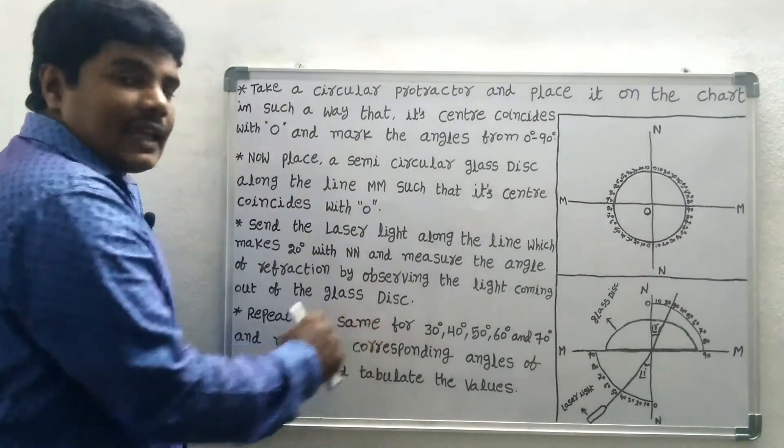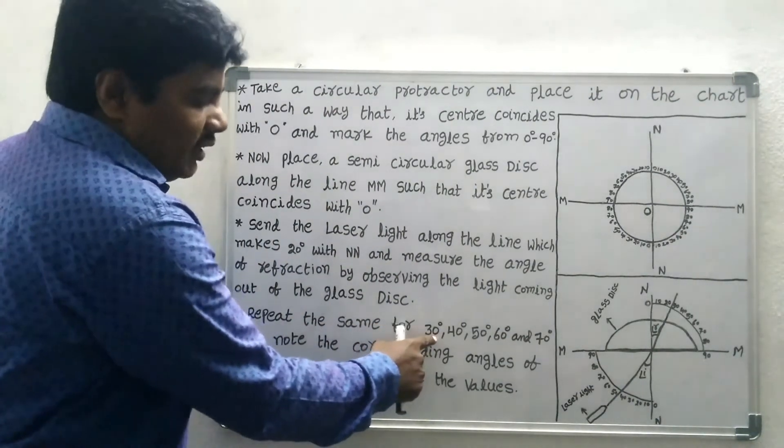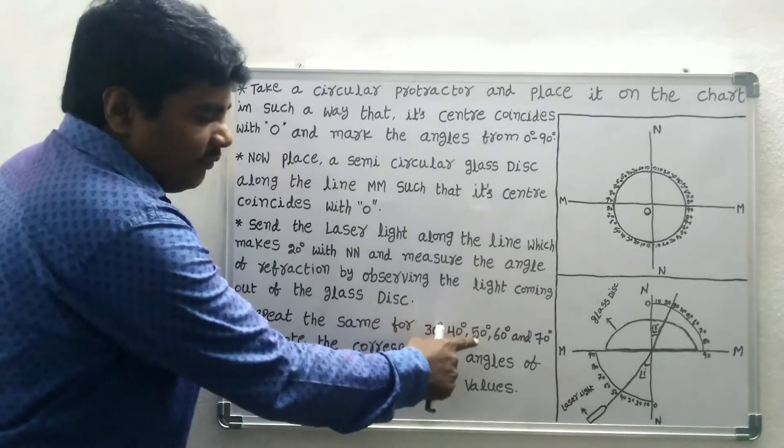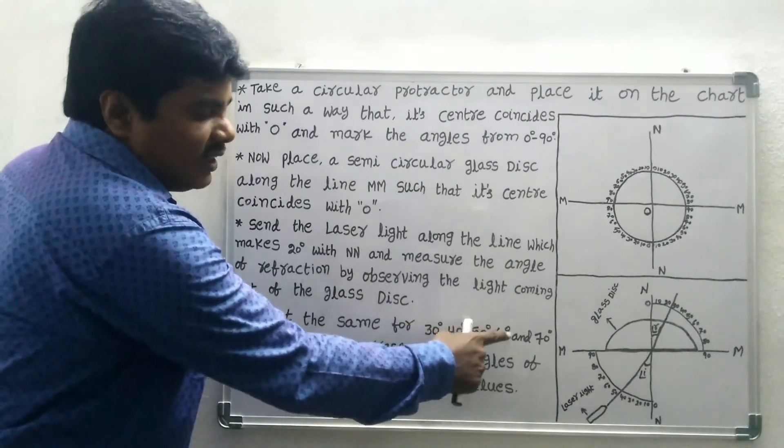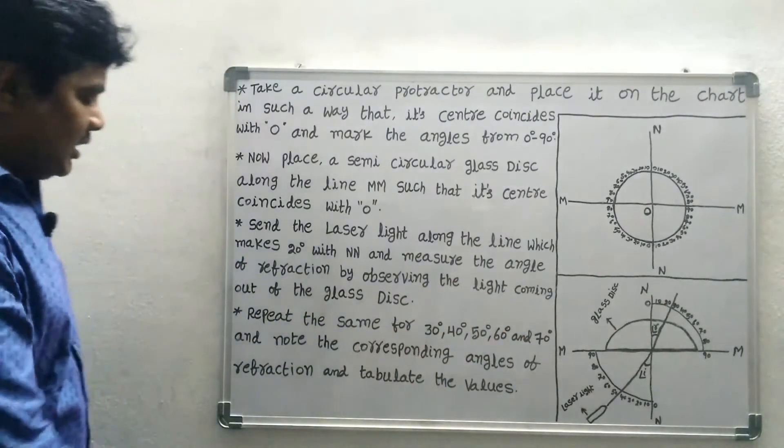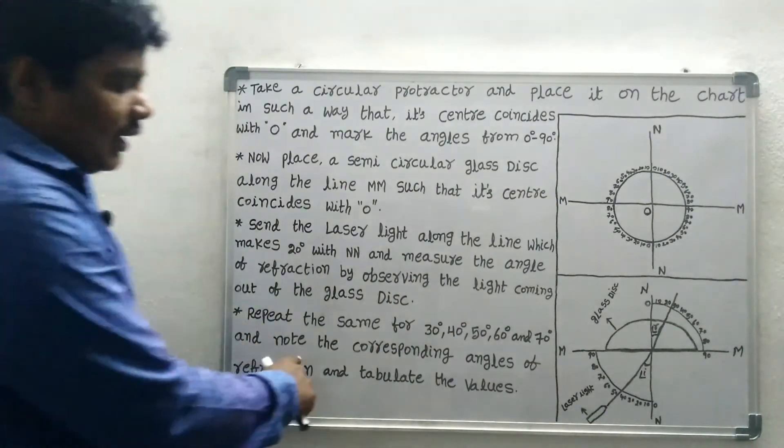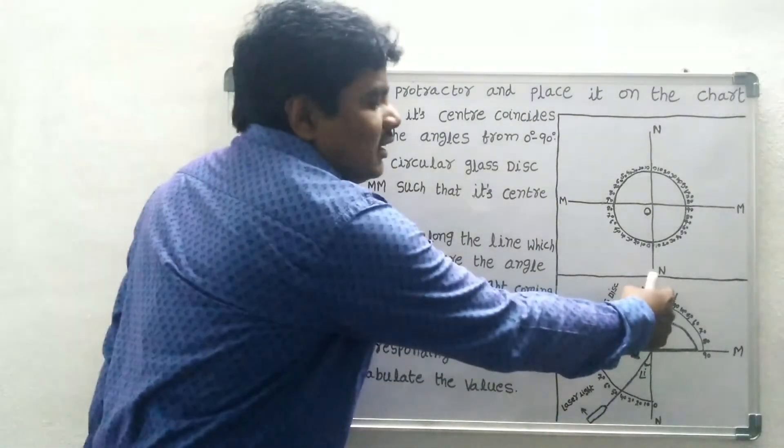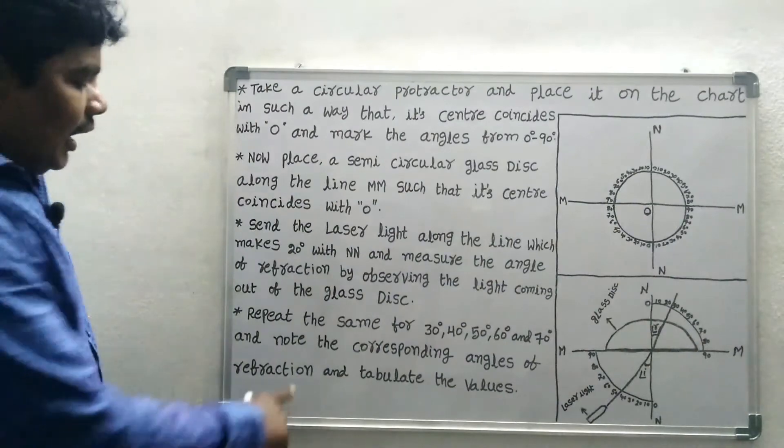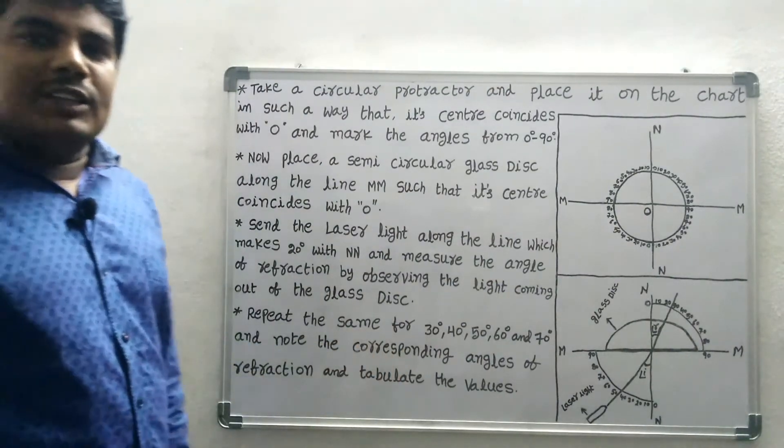Repeat the same for 30 degrees, 40 degrees, 50 degrees, 60 degrees, and 70 degrees, and note the corresponding angles of refraction and tabulate the values.